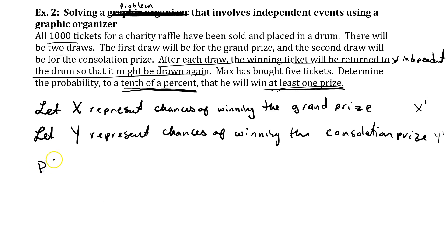So, the probability of Max winning the grand prize is going to be 5 out of 1,000. That means the probability of Max not winning is going to be 995 out of 1,000. Those things go hand in hand. The probability of winning the consolation prize, same thing, 5 out of 1,000. And the probability of not winning is going to be 995 out of 1,000 tickets.